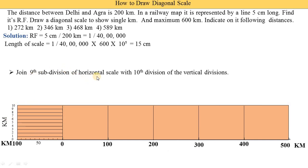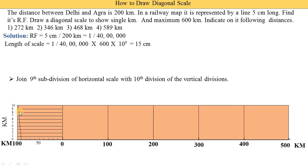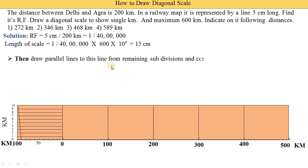We join the 9th subdivision of the horizontal scale to the 10th division on the vertical scale. On the horizontal scale there are divisions 1 through 10, and the 9th division is connected to the 10th division on the vertical scale to get one diagonal line. Then, using a roller scale or drafter, we draw parallel lines to this line from all remaining subdivisions to complete the diagonal scale.